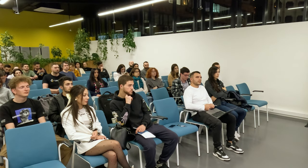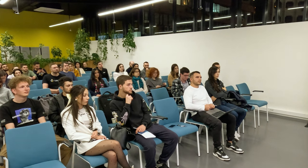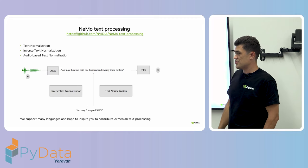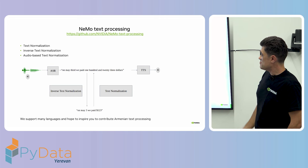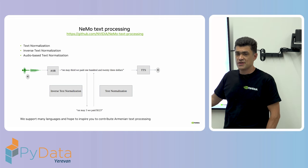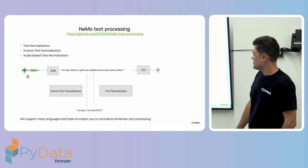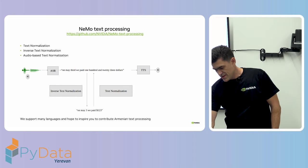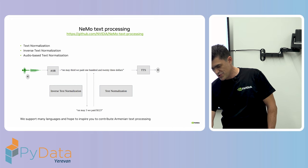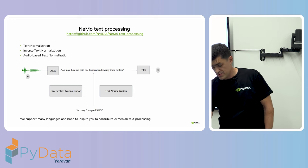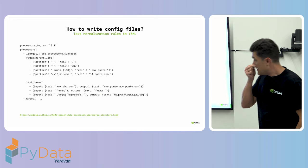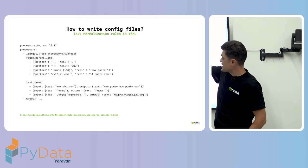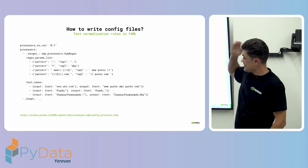For this task we even have a special project on GitHub called NeMo Text Processing. It already supports a lot of languages, but unfortunately it doesn't support Armenian yet. We hope that will change — we'll try to do some work on it, and you're welcome to contribute to open source as well. We can use the already prepared SubRegex processor and specify a list of parameters to do this kind of text normalization.